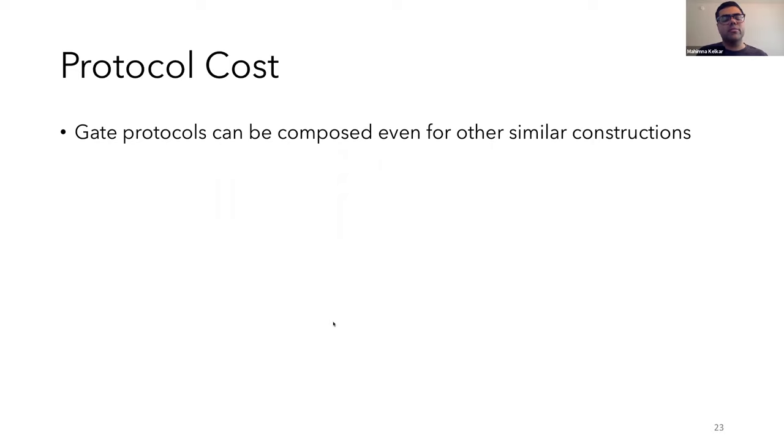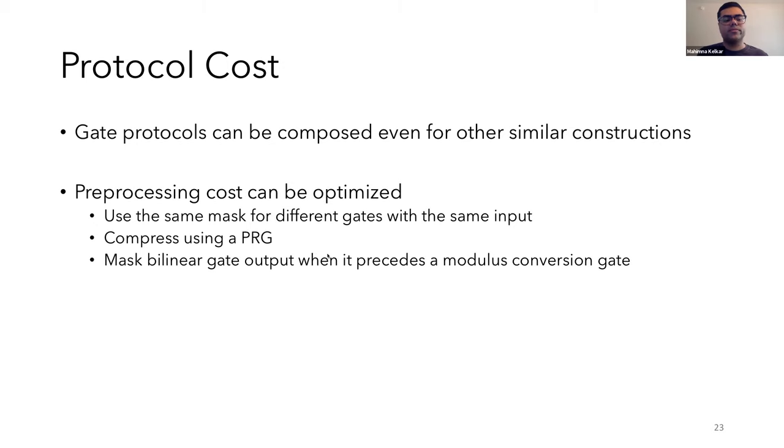These gate protocols can be easily composed to compute the overall protocol cost for our constructions and also for other similar constructions in this alternating moduli paradigm. We can optimize some of the cost of preprocessing using standard techniques, like using the same mask for the same input or compressing the preprocessing using a PRG. For our constructions in particular, since the bilinear gate will often feed into the modulus conversion gate, which requires reconstructing the masked input as its first step, we can also reduce the preprocessing by masking the output within the bilinear gate itself. Another highlight is that all of our preprocessing is PCG-friendly in that the correlated randomness that we require can be generated with sublinear communication cost and good computational efficiency for multiple instances at the same time.